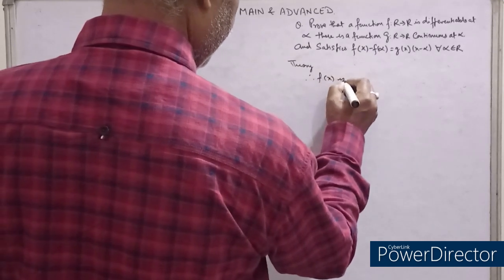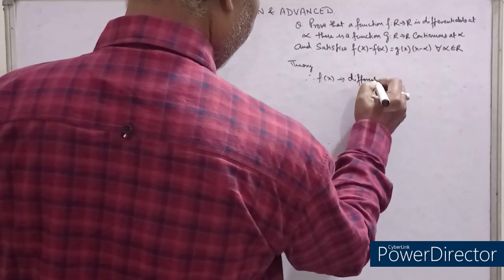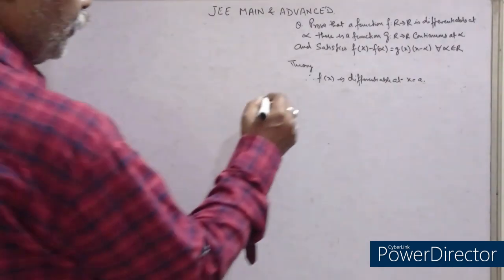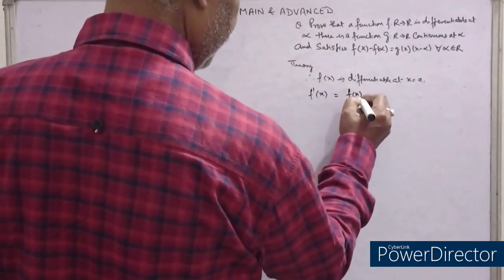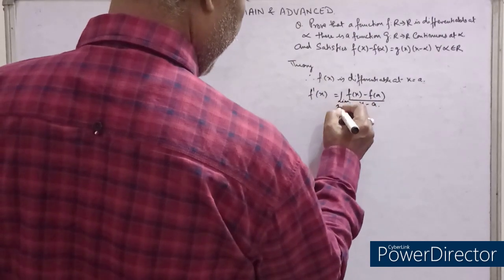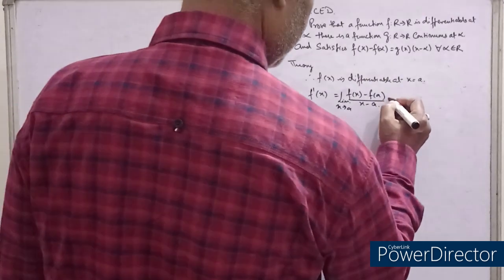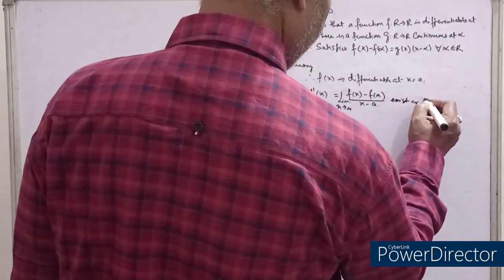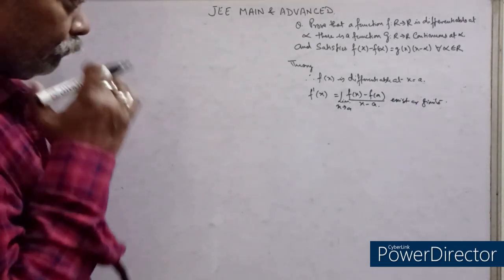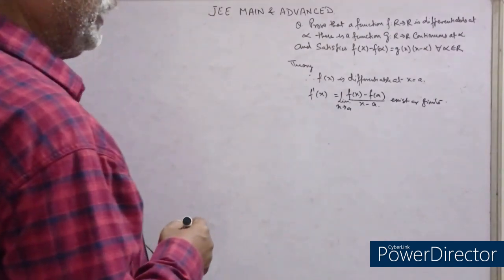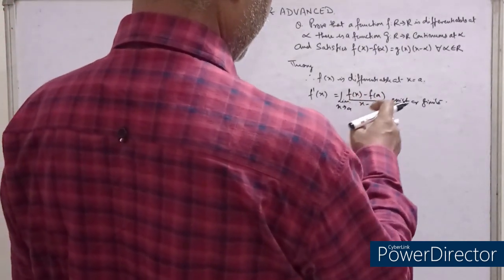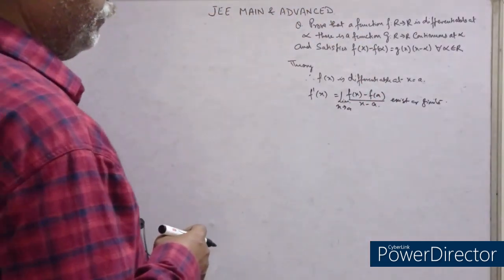Now the next topic: a function f(x) is differentiable at x = a if the limit as x tends to a of [f(x) - f(a)] / (x - a) exists and has a finite value. That is the main concept of differentiability.